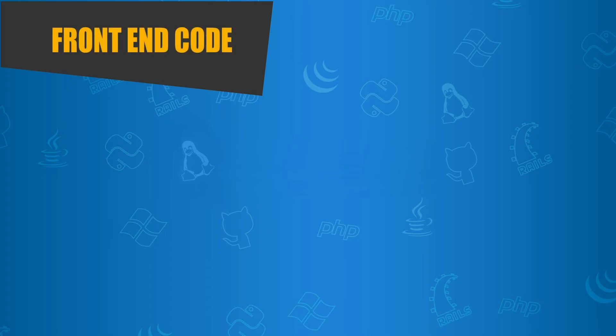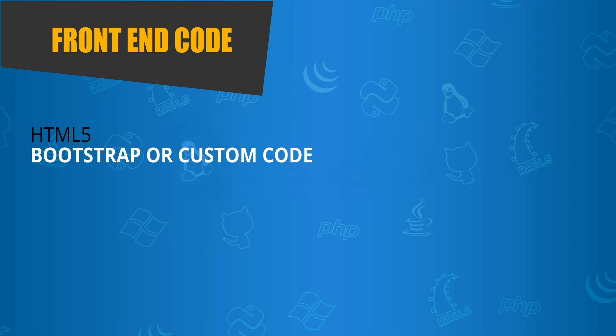Let's start with front-end code since it's easiest to learn and you can do it without a server. First thing you need to learn is HTML5. HTML is a code that you use to display text, images, and paired with your CSS, the overall look of the website. You can either use a framework like Bootstrap, or you can custom code your own HTML. There are things you need to account for when creating correct HTML code, but for the most part it is standardized across all browsers. If you use Bootstrap or another framework, don't overdo it.